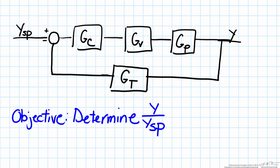We have a block diagram which is of a general feedback control scheme, where we have an input variable ysp, or the set point of our variable, and our output variable y. So our goal here is to use block diagram algebra to determine the unified transfer function that relates y to ysp.